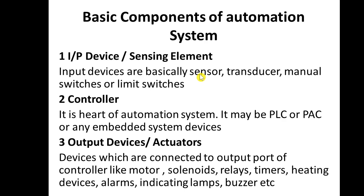For example, a temperature sensor senses the temperature and converts it into an electrical signal that is given to the controller. It may also be a transducer or switches — if some operations are manual, manual switches are provided. Limit switches automatically switch on or off according to the preset limit given in those switches.